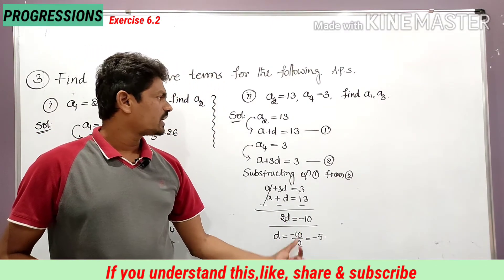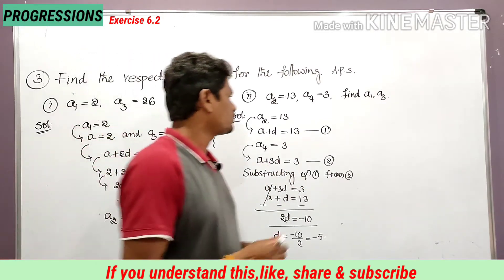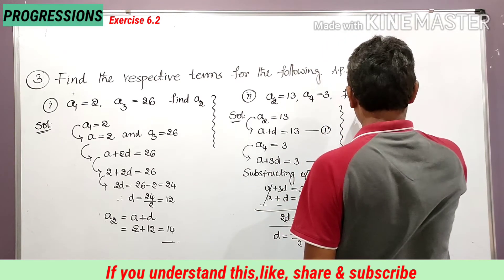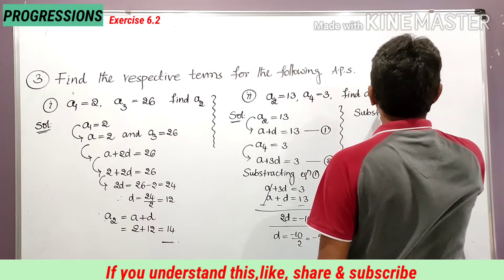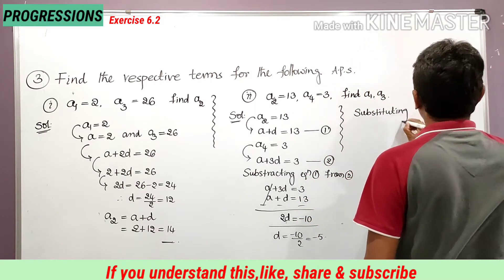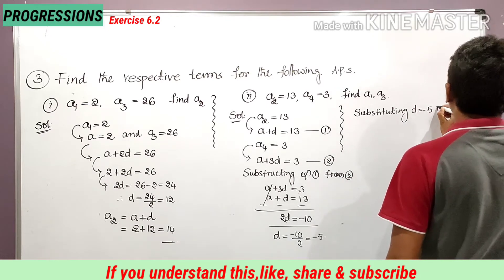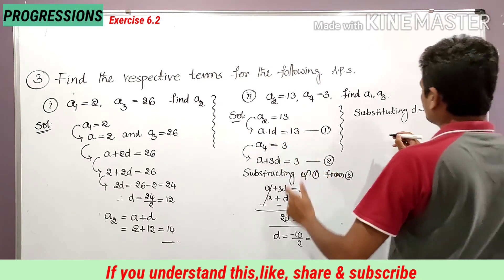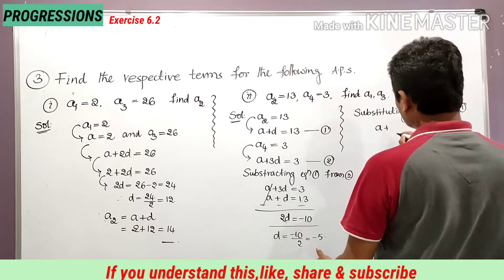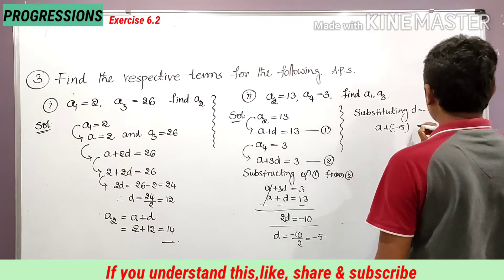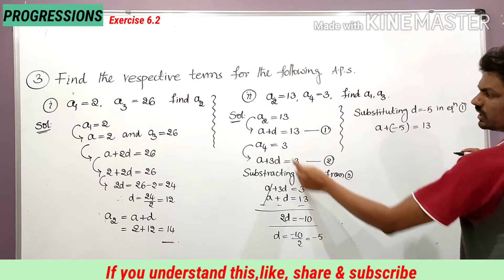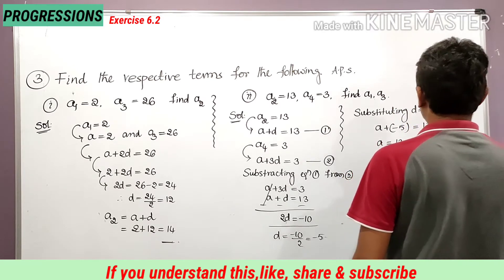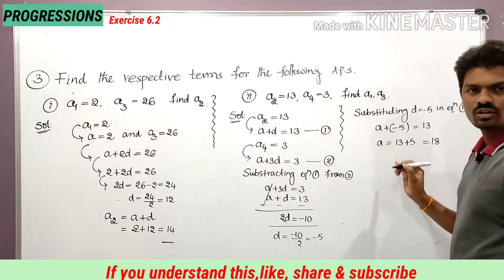Substituting d equal to minus 5 in equation 1: a plus d is equal to 13, so a plus (minus 5) is equal to 13. Taking minus 5 to the right side: a is equal to 13 plus 5, which is 18. So a is equal to 18.